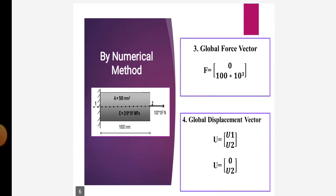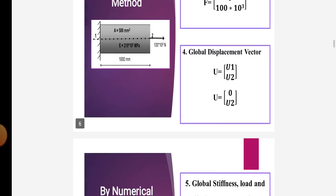In step number three, the global force vector F is equal to [0, 100 × 10³]. In step number four, the global displacement vector U is equal to [U1, U2]. Therefore, U1 is equal to 0 and U2 is unknown.